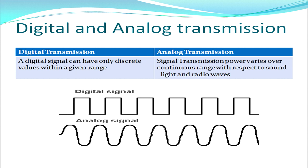Next we move on to broadly classified transmission types: digital and analog. A digital signal can have only discrete values — 0 and 1 — with nothing in between. An analog signal varies over a continuous range with respect to sound, light, radio waves, or time. Today in computer networks we basically follow the digital transmission mode. The screen shows both waves — you can see the difference between them.